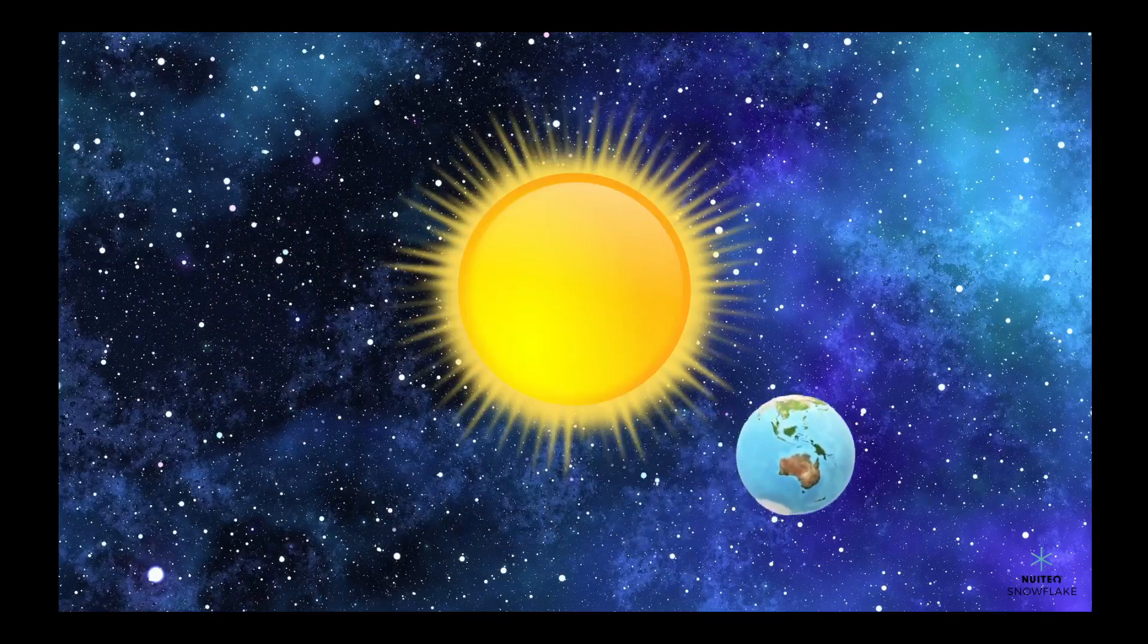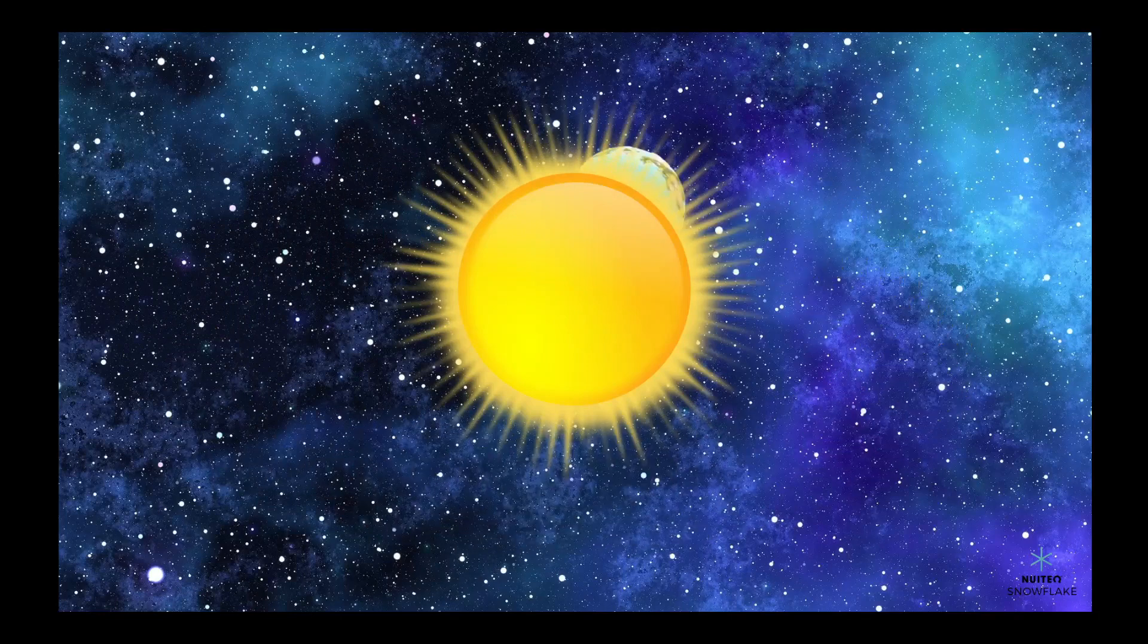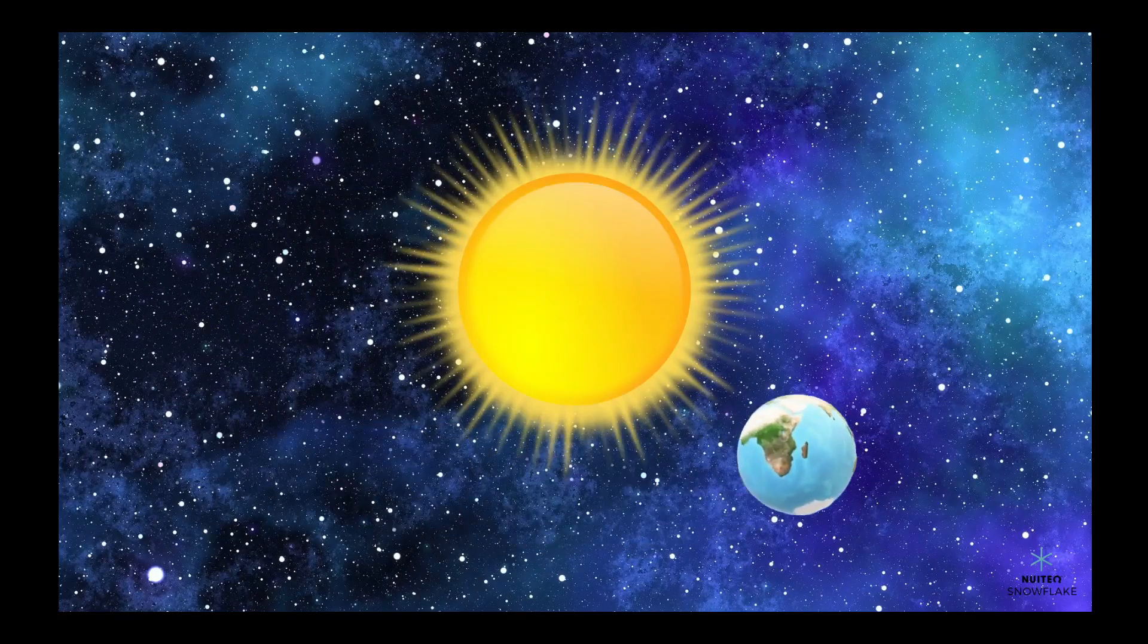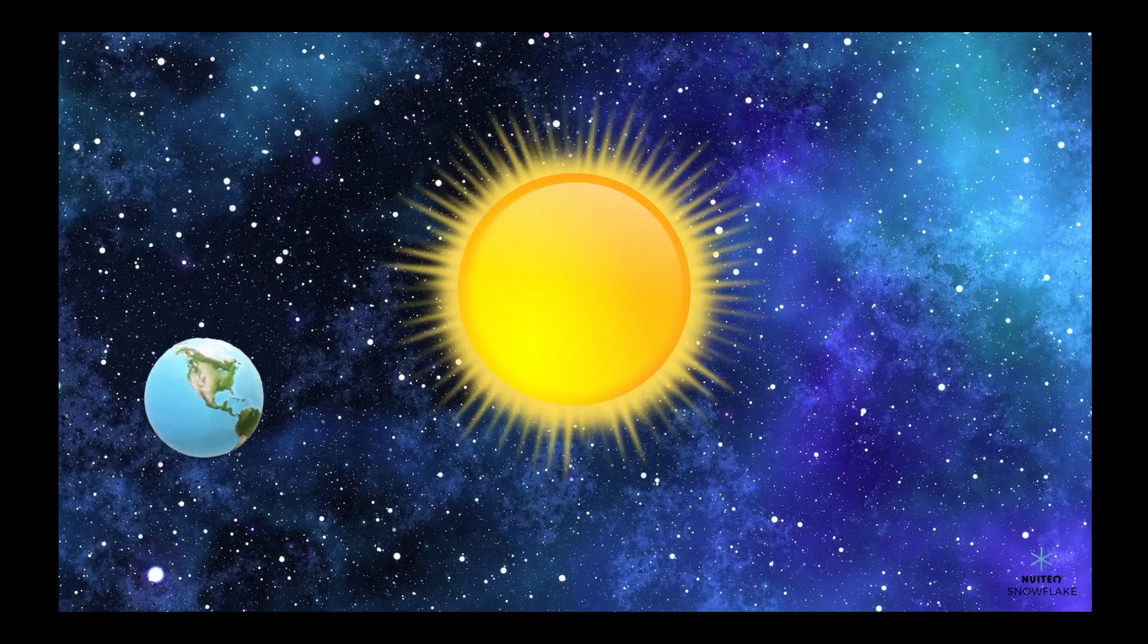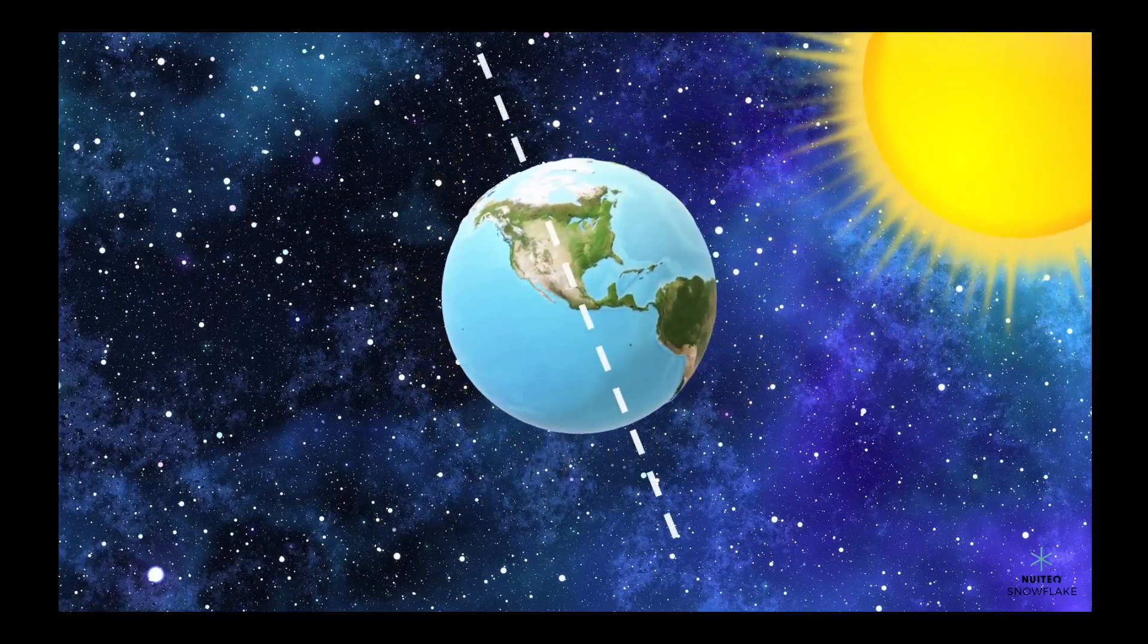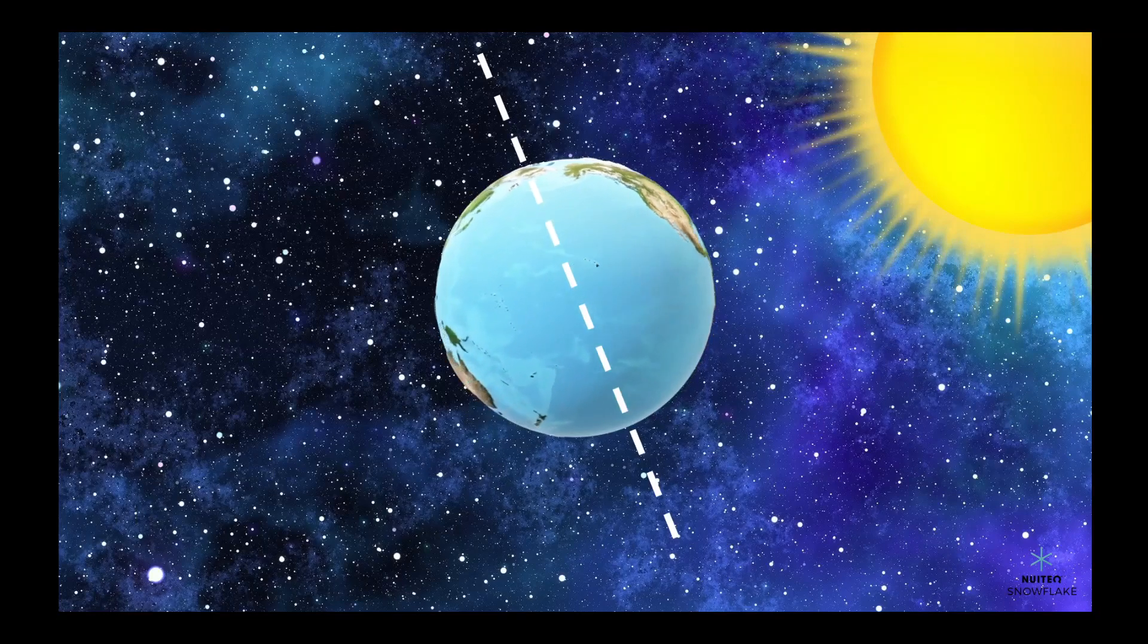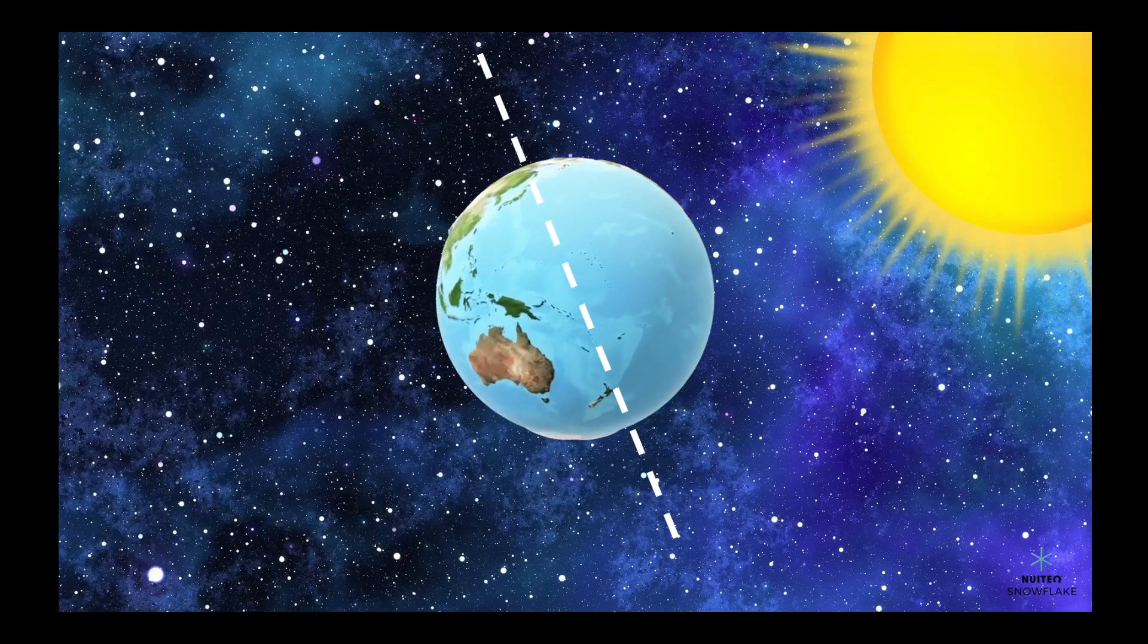The earth is a big round ball that spins around a giant ball of fire called the sun. As the earth spins, different parts of it face the sun, which is why we have day and night. But did you know that the earth is also tilted? This means that as it moves around the sun, different parts of the earth get different amounts of sunlight, which causes the seasons.